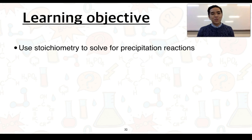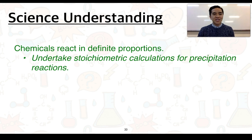For the third and final video for 4.3, our learning objective is to use stoichiometry to solve precipitation reactions. This links directly to this science understanding: chemicals react in definite proportions. We need to undertake stoichiometric calculations for precipitation reactions.